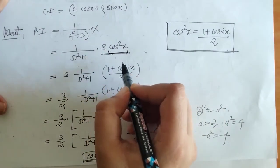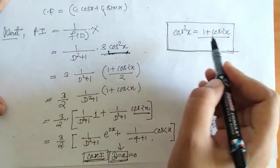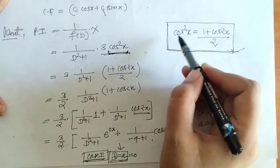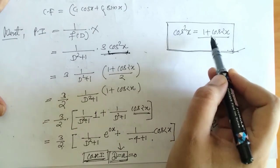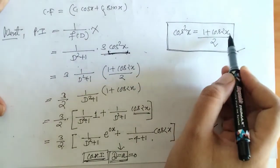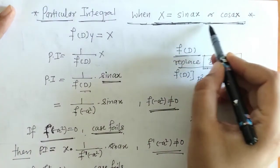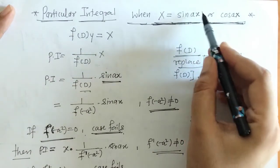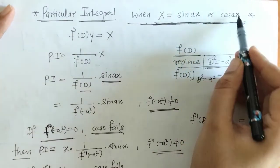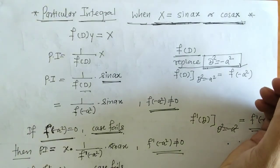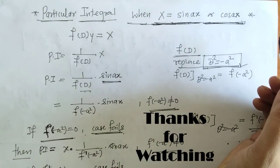We note that we wrote cos²(x) using the identity so that cos or sin is free from its power. In this way we proceed for finding PI when we have sin or cos, noting it must be free from its power. That's it for now. See you in the next video. Thank you. Keep watching.